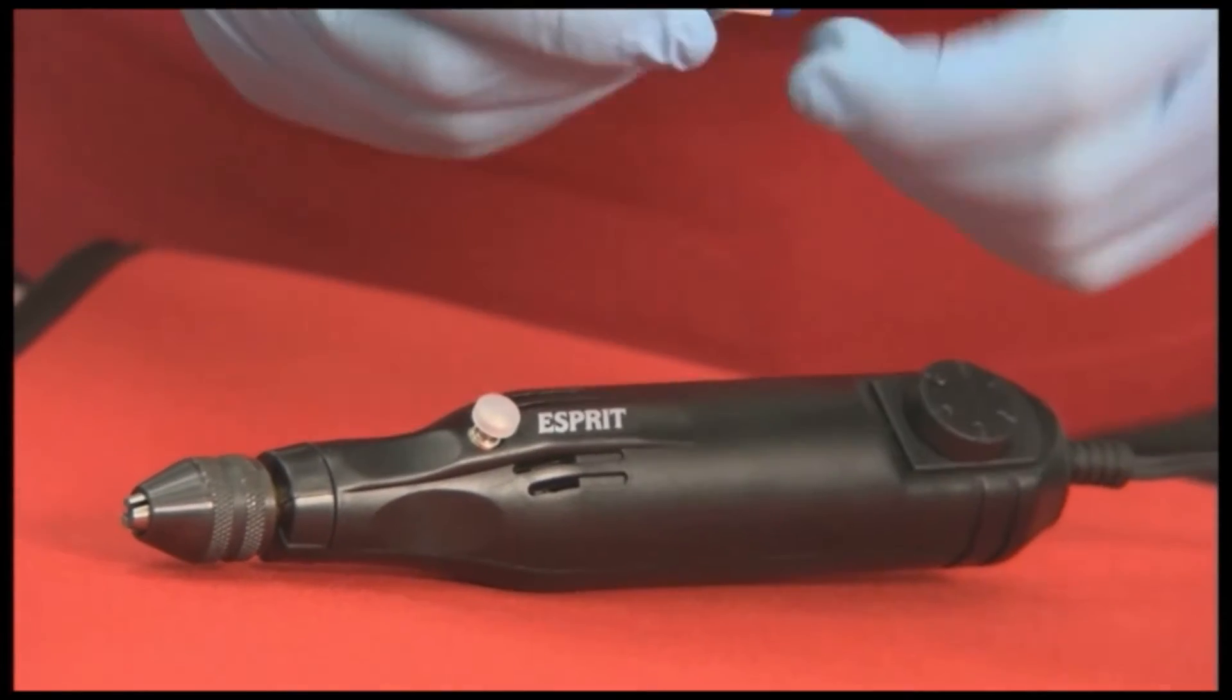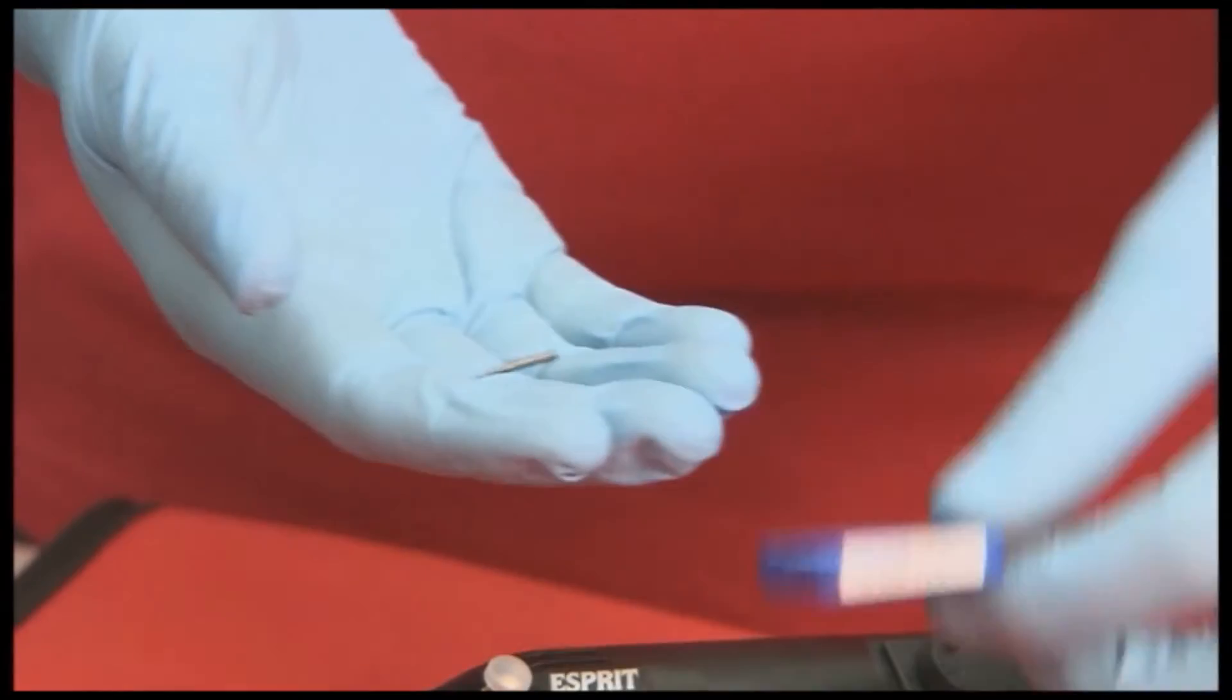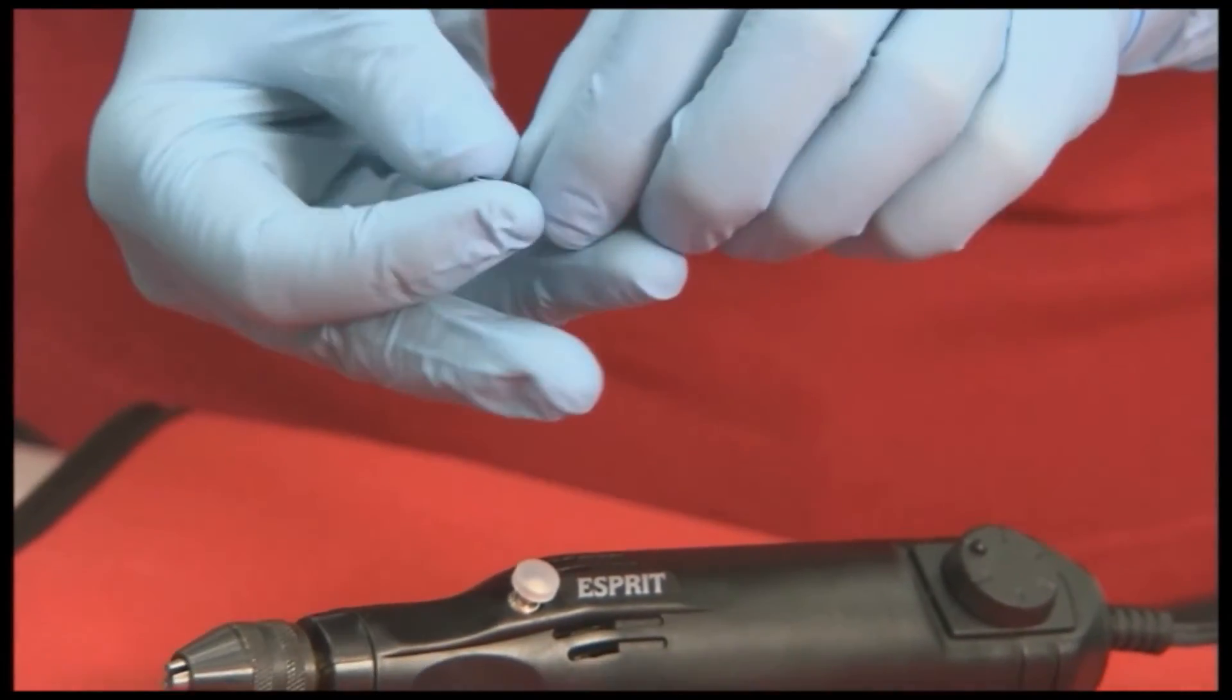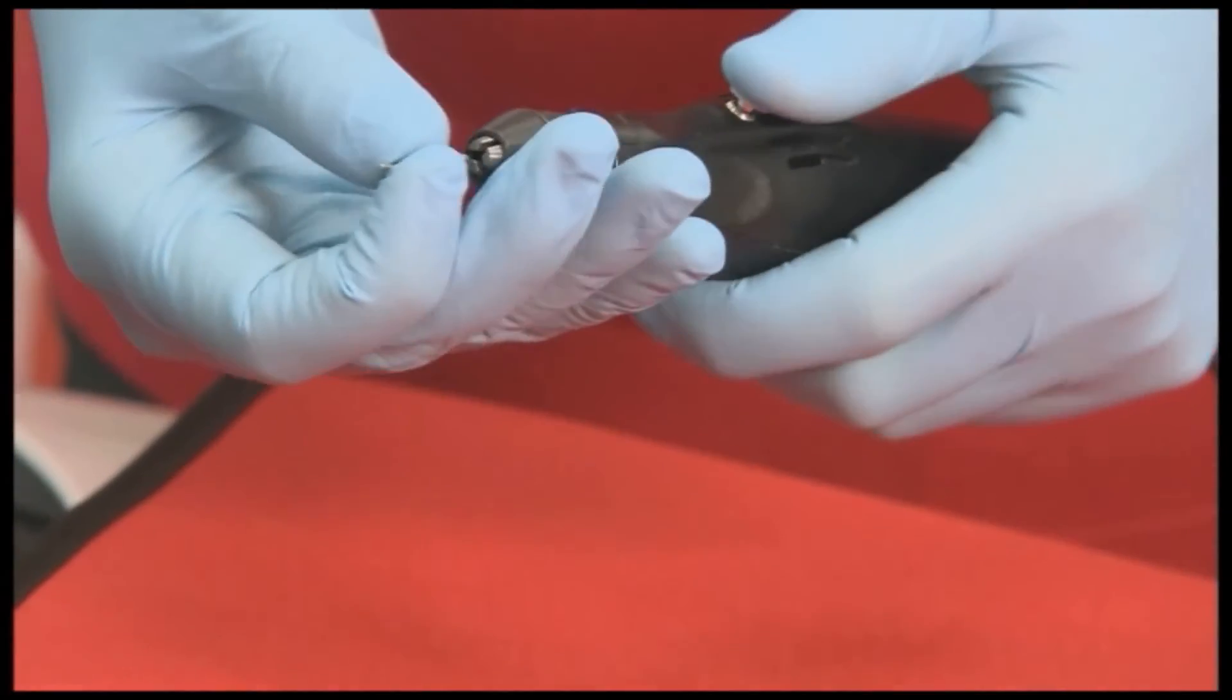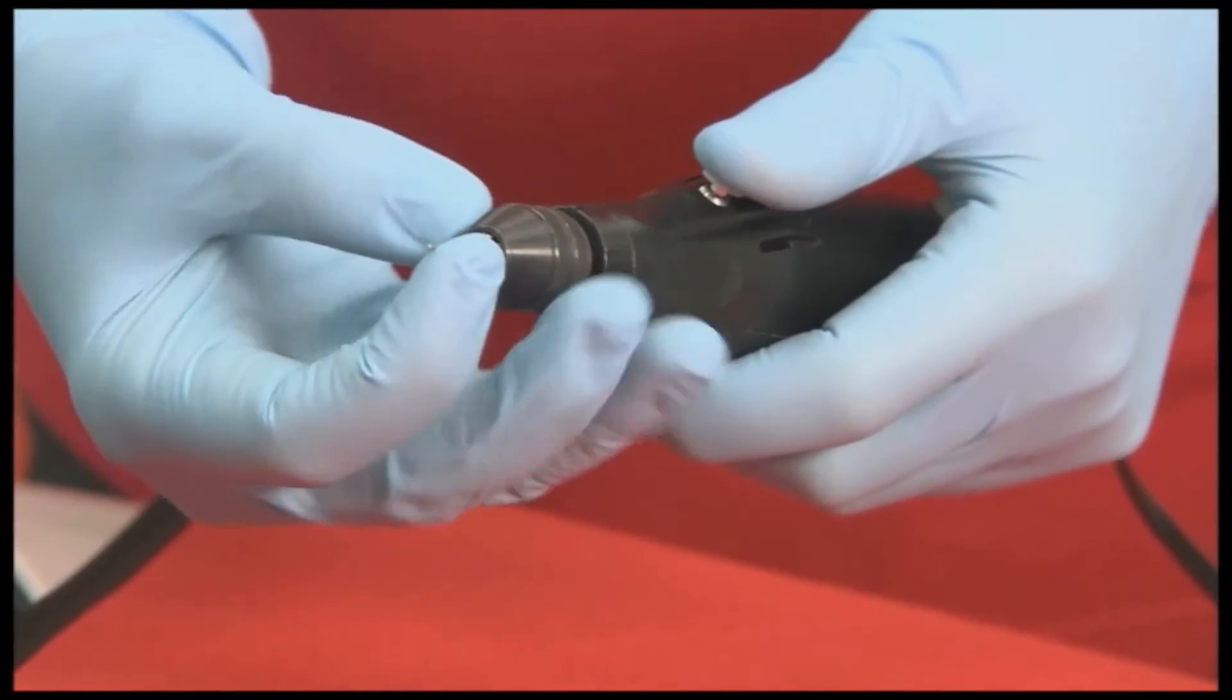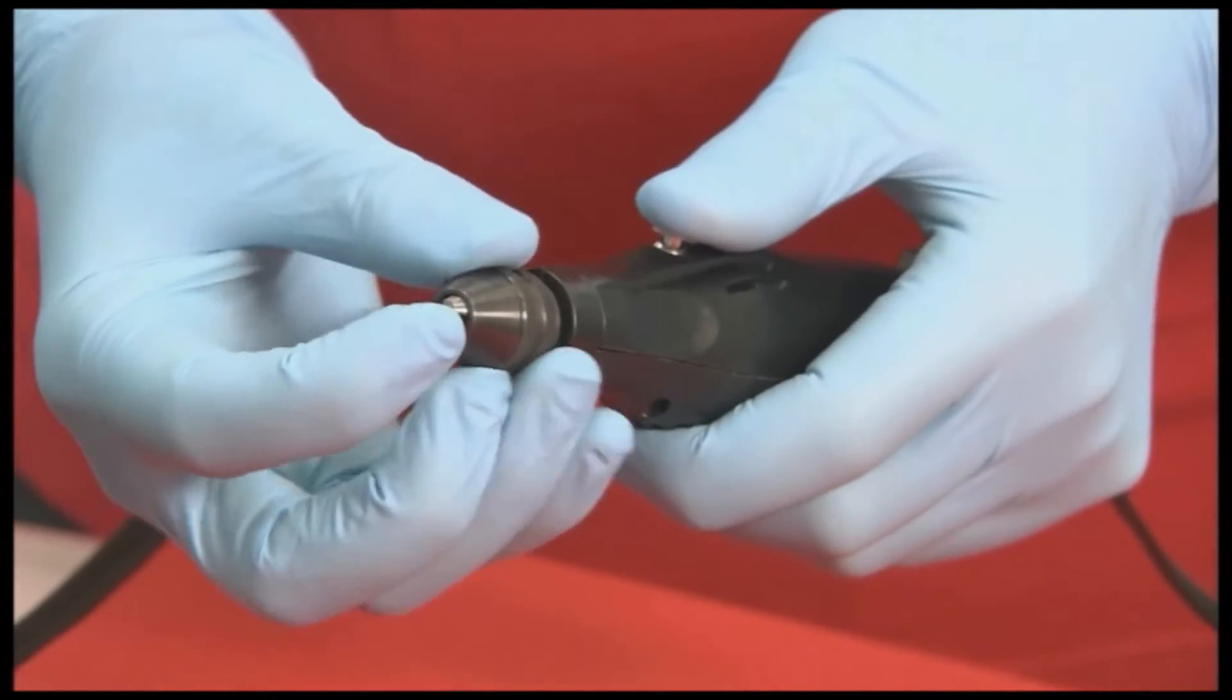When using the drill, the one millimeter blue burr should be selected. It's inserted into the chuck and tightened using the locking button.